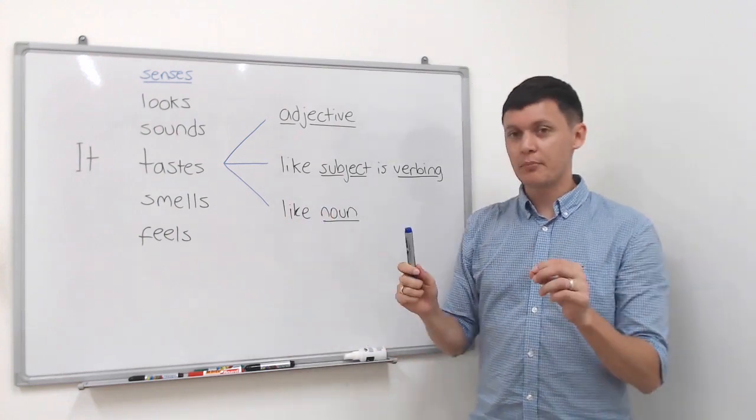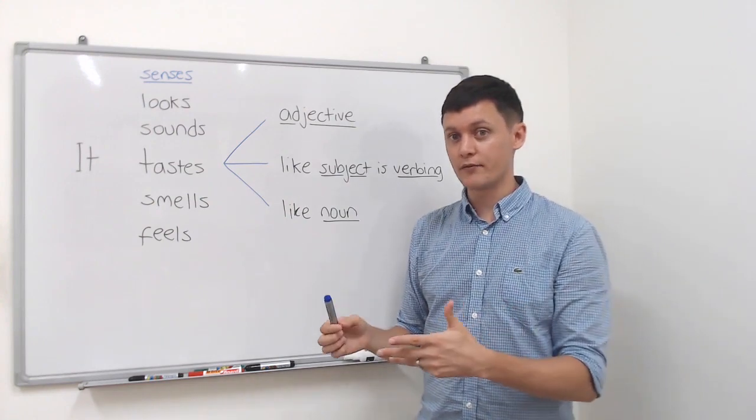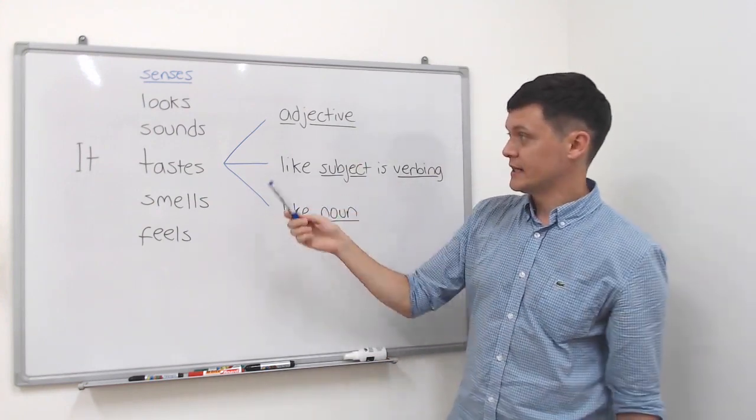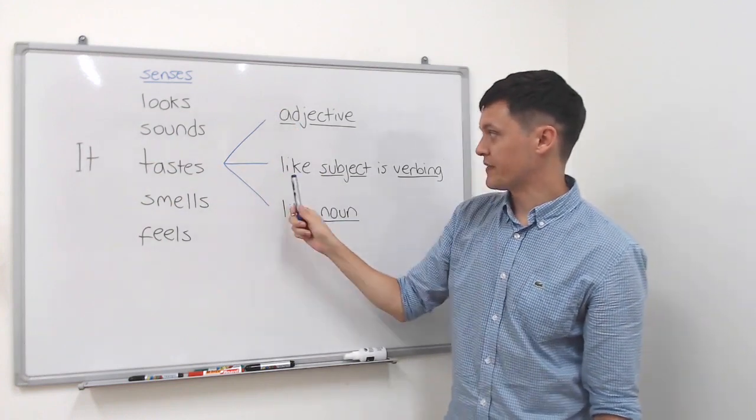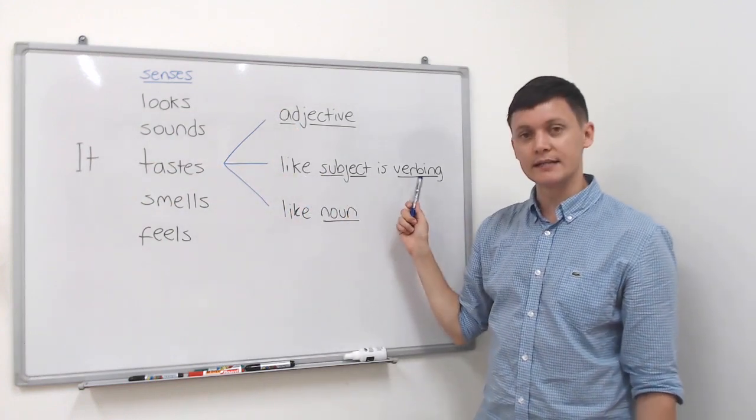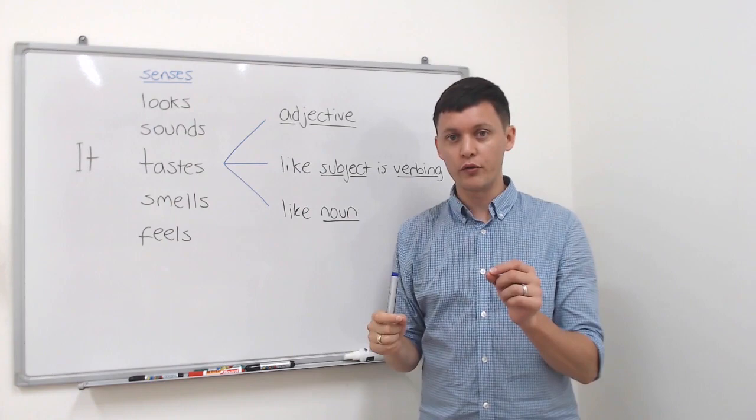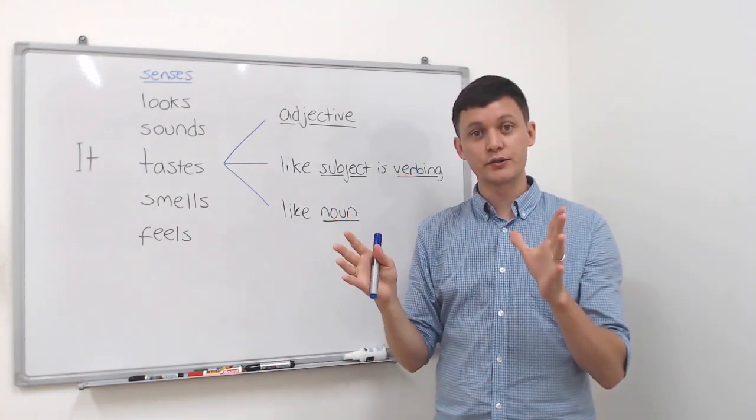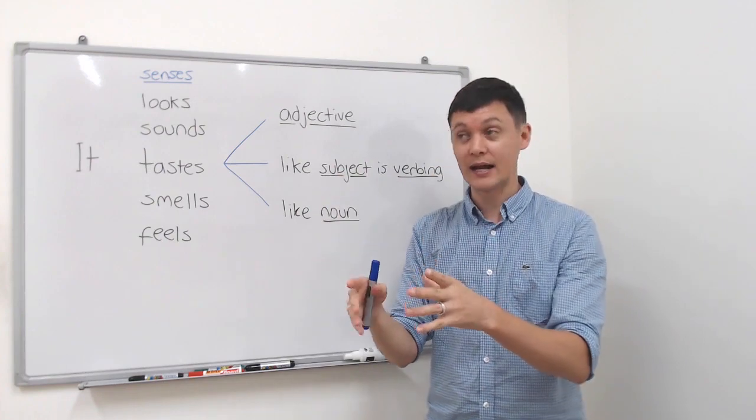The tricky part is when we try to use a verb. Now we've got this very specific structure we must use. So it's the same thing here but then it's like 'subject is verbing'. Now there's a very important thing here.